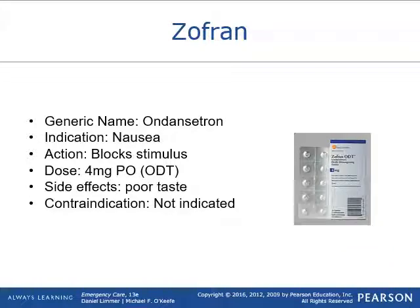Ondansetron, known as Zofran, is given for nausea. It works by blocking the receptors that cause the patient to feel nauseated. The dose is 4 mg given orally as an oral dissolving tablet — not supposed to be swallowed or chewed, just placed in the mouth and allowed to dissolve. Side effects include poor taste, though most patients don't complain. Contraindications are that it's not indicated — the patient isn't nauseated — or if they're actively vomiting, since they'll likely vomit it right back up and the Zofran won't be effective once that gag reflex is already stimulated.